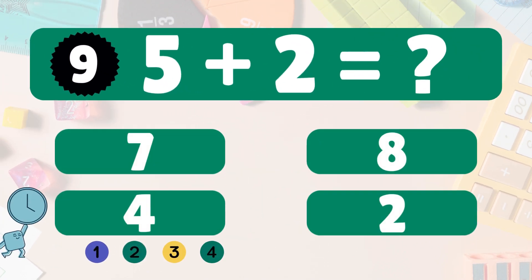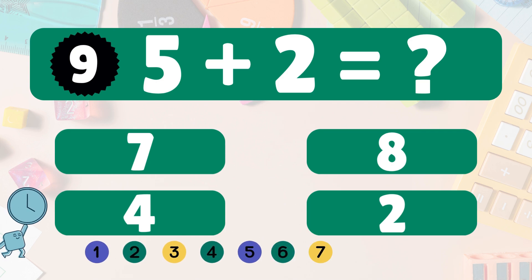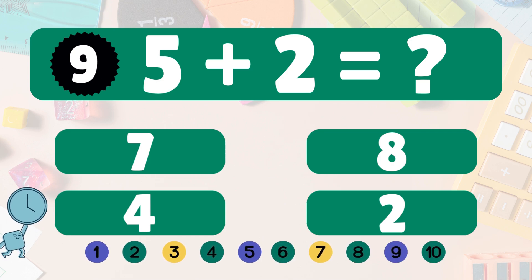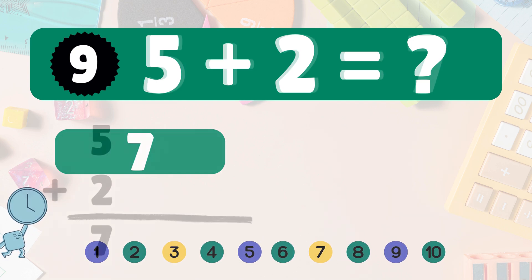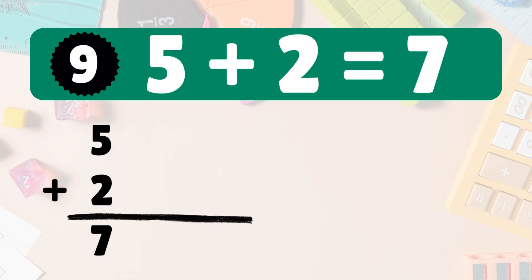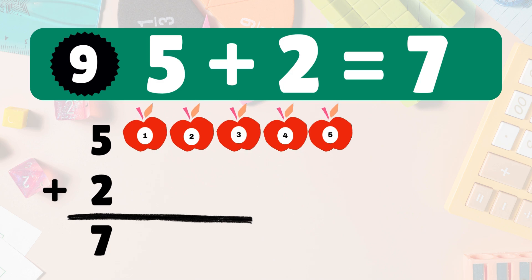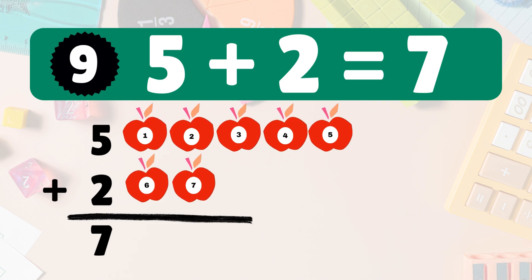5 plus 2 equals what? 5 plus 2 is 7. 5 apples. Add 2 more. Count them all. 1, 2, 3, 4, 5, 6, 7. So 5 plus 2 is 7. High 5. Next.